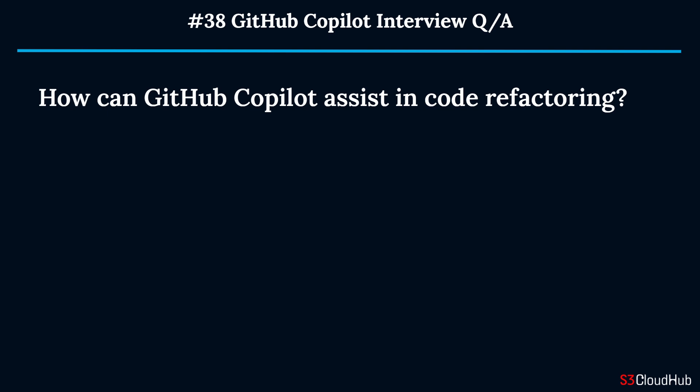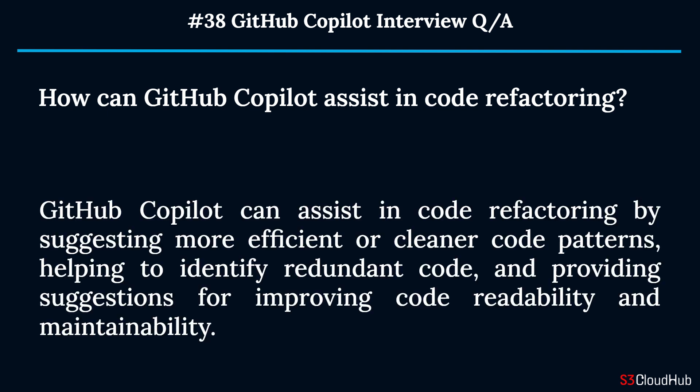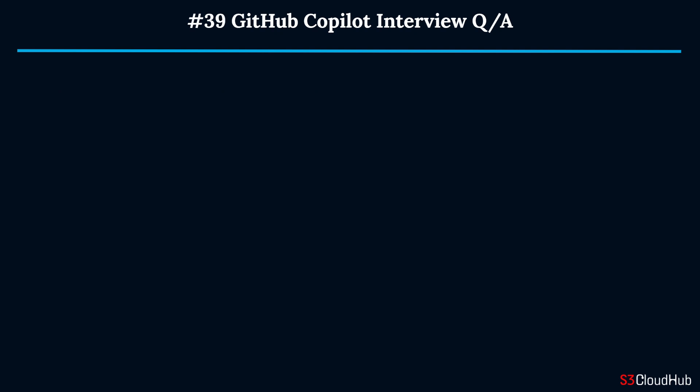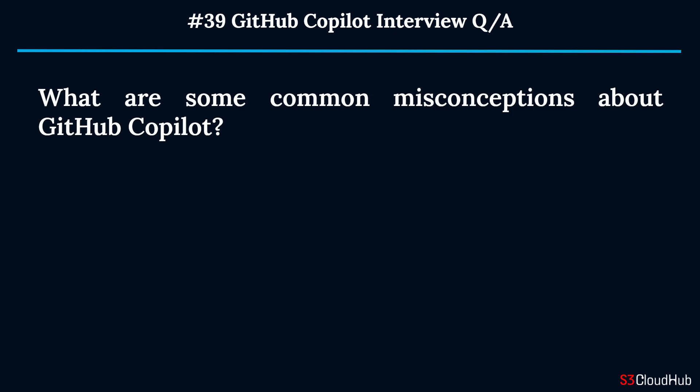Question thirty-eight: How can GitHub Copilot assist in code refactoring? GitHub Copilot can assist in code refactoring by suggesting more efficient or cleaner code patterns, helping to identify redundant code, and providing suggestions for improving code readability and maintainability.